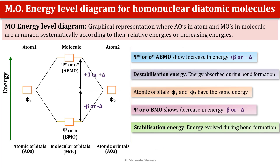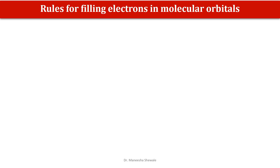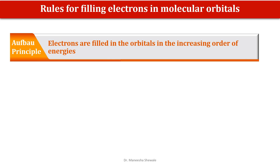In the first video on molecular orbital theory, we have seen how to construct the energy level diagram for homonuclear diatomic molecules. Once the energy level diagram is drawn, the electrons have to be filled in the molecular orbitals. The same rules followed while filling electrons in the atomic orbitals have to be followed here. The first is the Aufbau principle — the electrons are filled in the orbitals in the increasing order of energy, that is the molecular orbital having the lowest energy will be filled first.